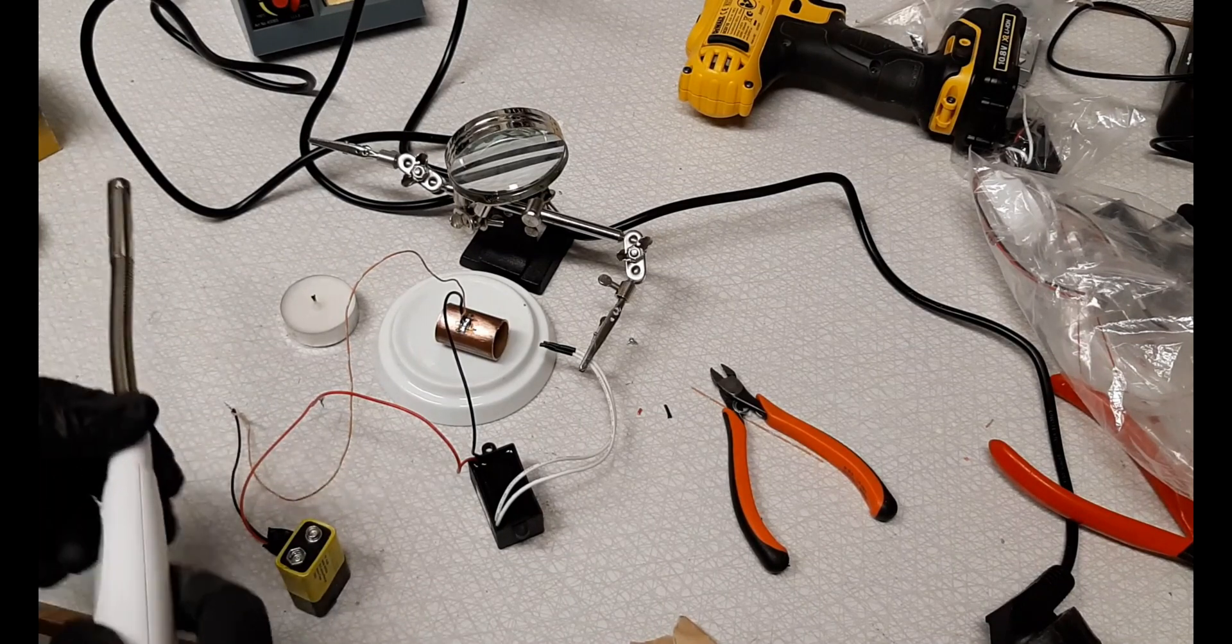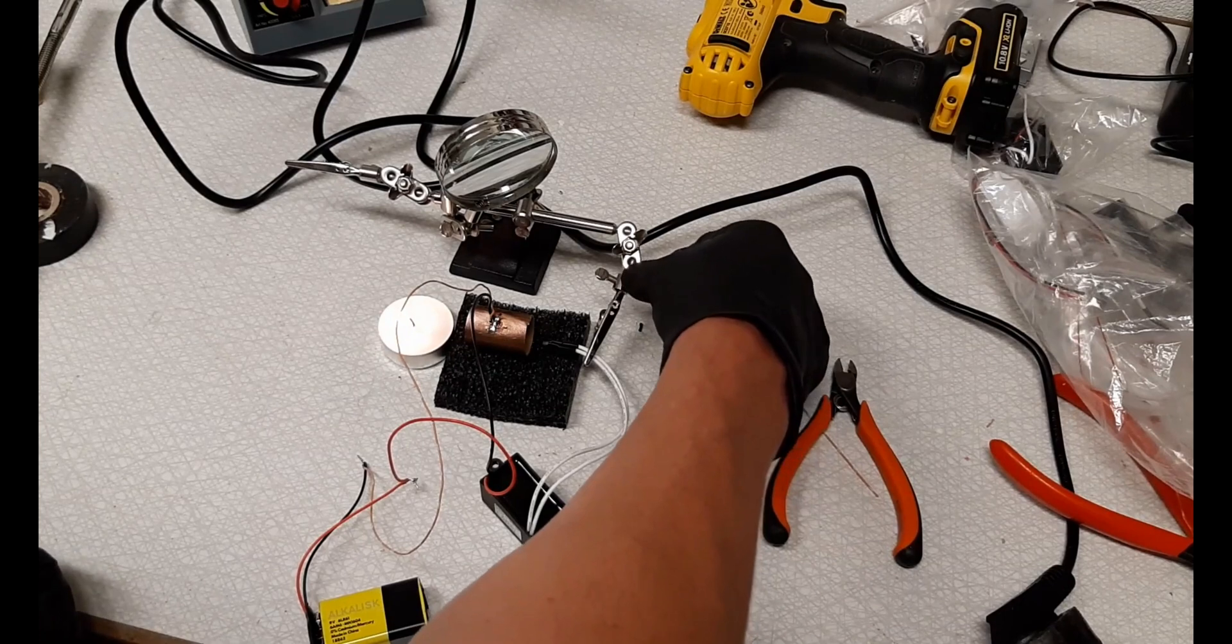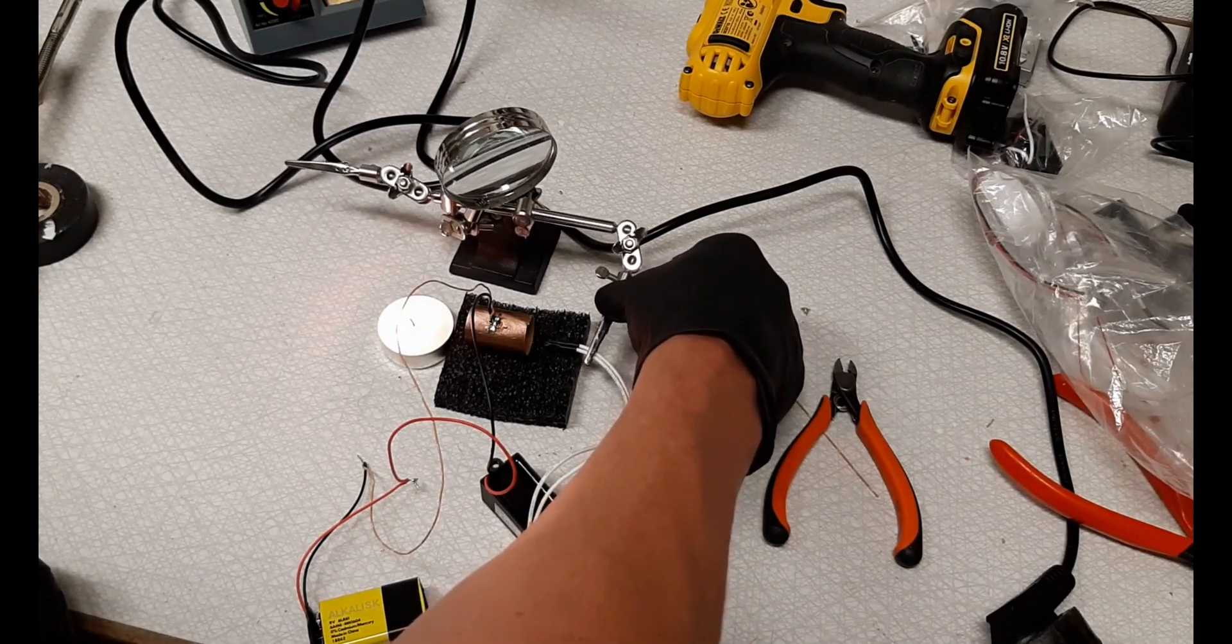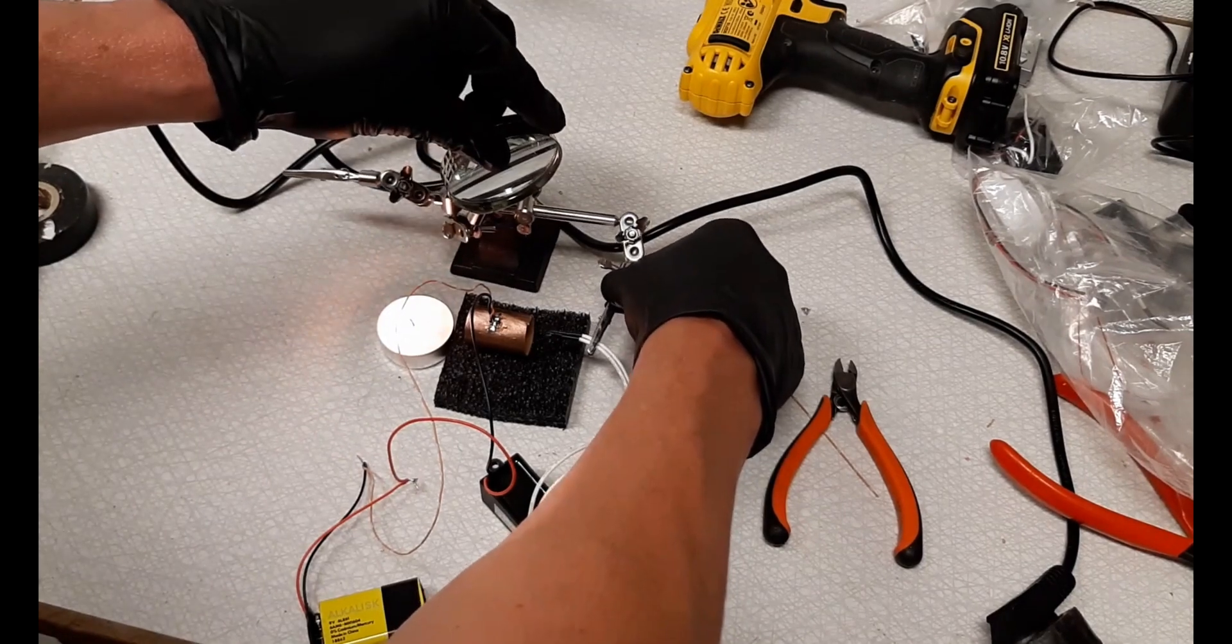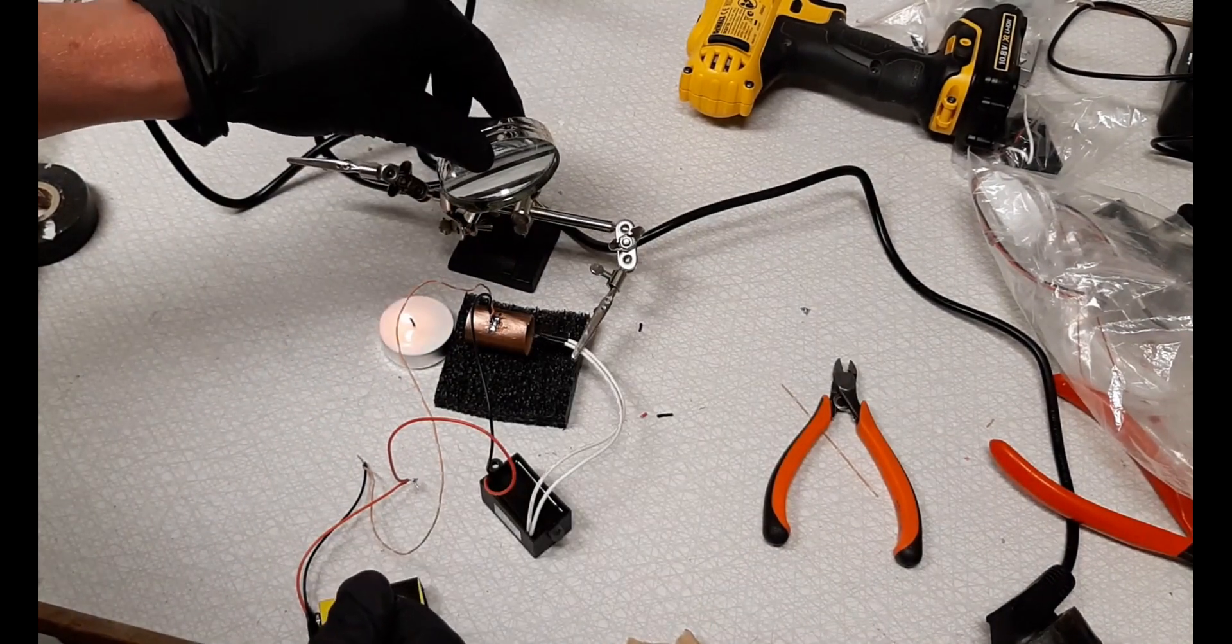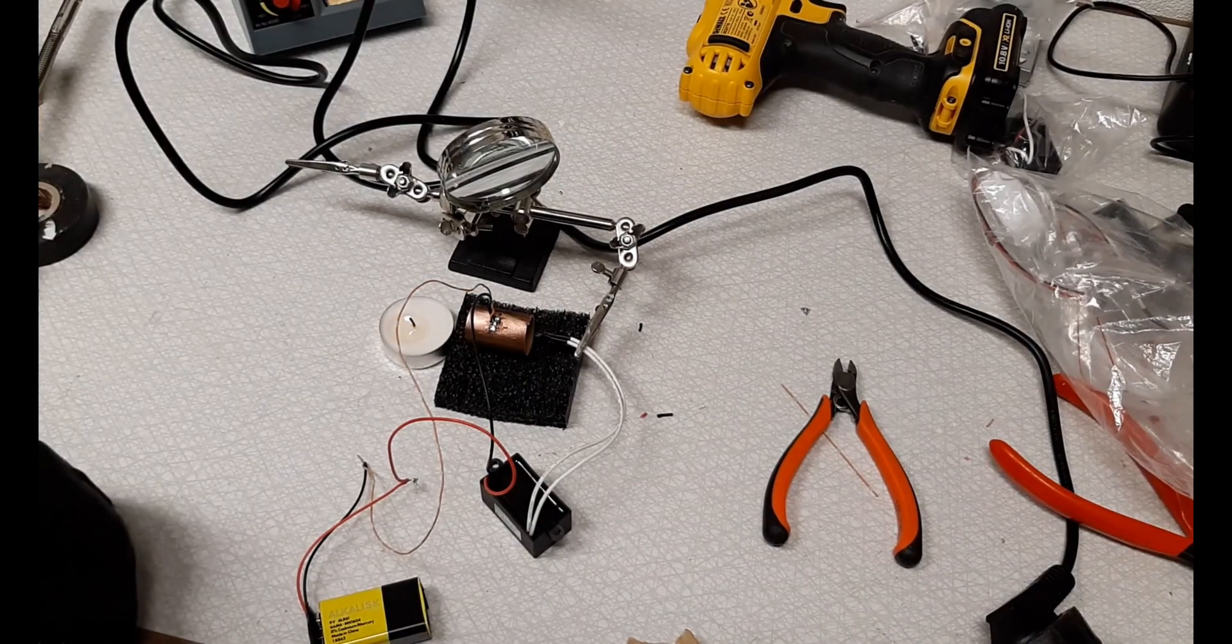I lit the candle to make the ion wind visible and I put the other wire from the ion generator to be in the center of the copper pipe. And as you can see, I managed to blow out the candle by using the ion engine.